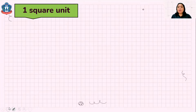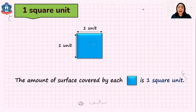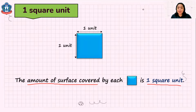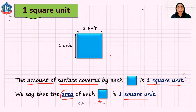Now let's study about 1 square unit. I have here a square tile. Each side of this square tile measures 1 unit. So the amount of surface covered by this square tile is what we call 1 square unit. Remember, the amount of surface covered. So we say that the area of each 1 square tile is 1 square unit. So that is what we call area — the amount of surface covered. If we have 1 tile or 1 square, we say that the area is 1 square unit.